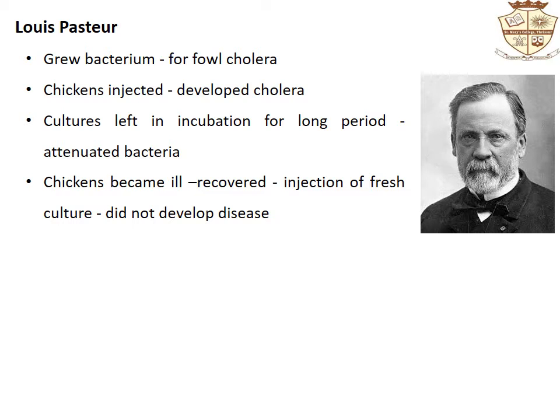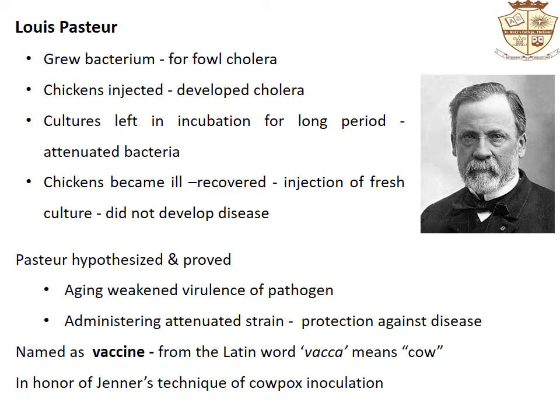Pasteur then used a fresh culture of the bacterium to inject into fresh chickens, but since his supply of chickens was limited, he had to use the previously injected chickens. Again to his surprise, the chickens were completely protected and did not develop the disease. Pasteur hypothesized and proved that aging weakened the virulence of the pathogen, and administering such an attenuated strain would protect against the disease. He called this attenuated strain a vaccine, a name derived from the Latin word vacca, meaning cow, in honor of Jenner's technique of cowpox inoculation.